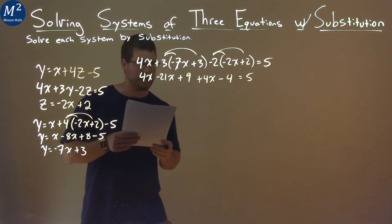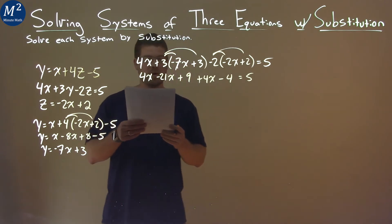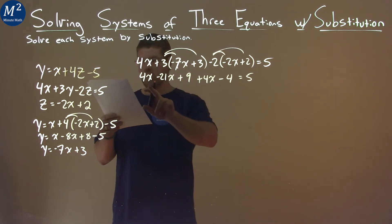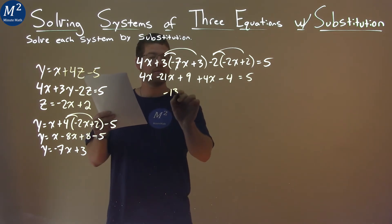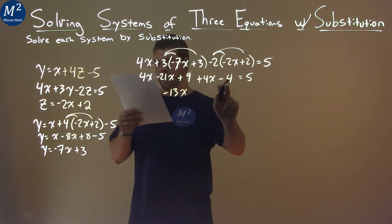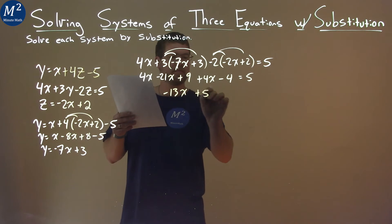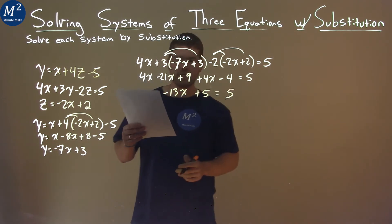So let's combine our like terms where we can. 4x minus 21x plus 4x equals -13x. So we have -13x here, 9 minus 4 is 5, and equals 5.